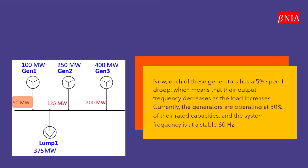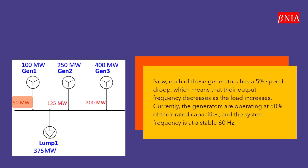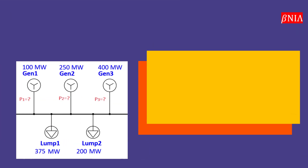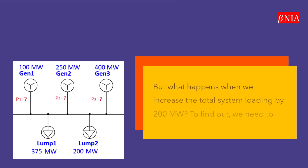Each of these generators has a 5% speed droop, which means that their output frequency decreases as the load increases. Currently the generators are operating at 50% of their rated capacities and the system frequency is at a stable 60 Hertz.